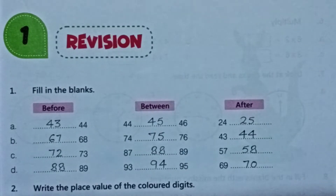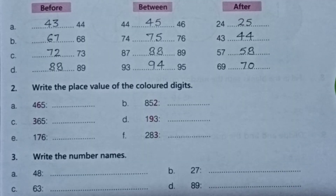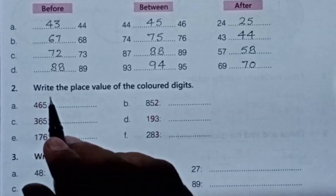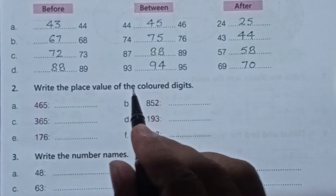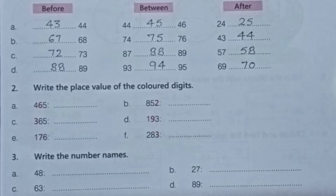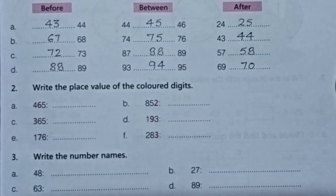Question number 1 is complete. Come to the next question — question number 2: write the place value of the colored digit. The colored digit's place value tells us whether it is in the ones place, tens place, or hundreds place.